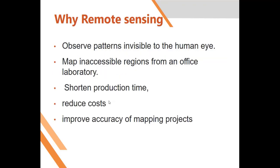So why should we use remote sensing? If you want to observe things you cannot see with your human eye, you should use remote sensing — for example, looking at pollution levels in the atmosphere, or measuring carbon dioxide in the atmosphere. Another example is mapping inaccessible regions, such as volcanic eruptions or lakes you cannot physically access.